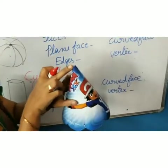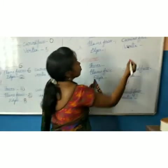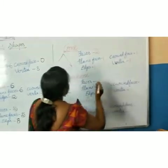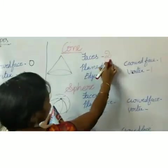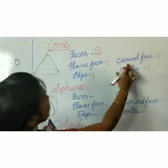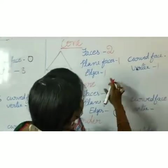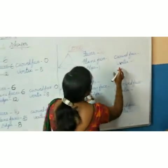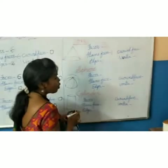See children, this is the corner. This is called vertex. How many? One. Understand children. Cone has how many faces? Two faces. One is plain face and another one is curved face. One edge and one vertex.